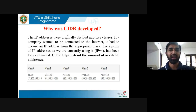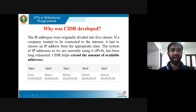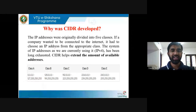Why was CIDR developed? You all know IP address is 32 bits long and there are 5 classes in IP address: A, B, C, D, and E. The IP addresses were originally divided into 5 classes. If a company wanted to be connected to the internet, it had to choose an IP address from the appropriate class.